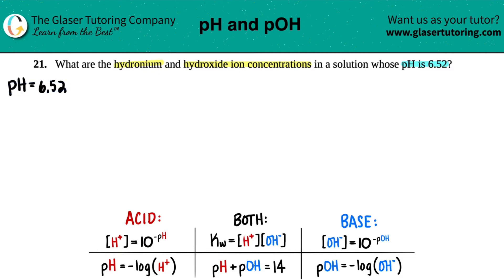Whenever you see hydronium, this is talking about H+. Sometimes you might see this as H3O+, but I like to just use H+. And then for hydroxide, this is OH-; there's no other alternative. So basically we're just looking for what's the H+ concentration and the OH-.